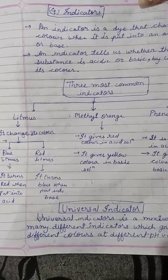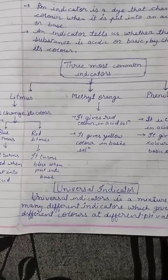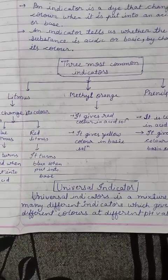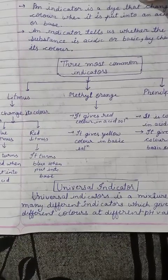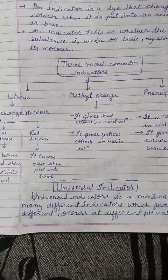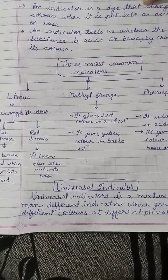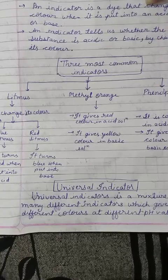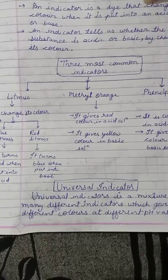Now one more type of indicator: the universal indicator. A universal indicator is a mixture of many different indicators.